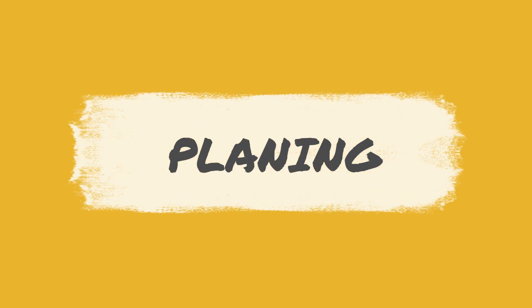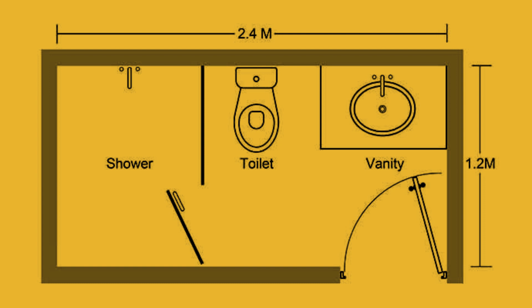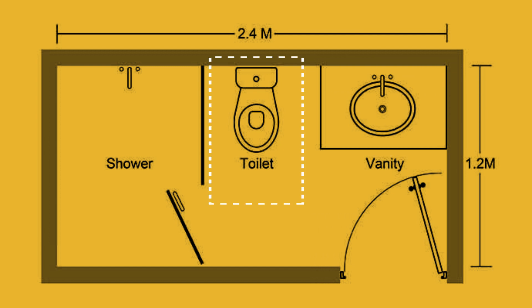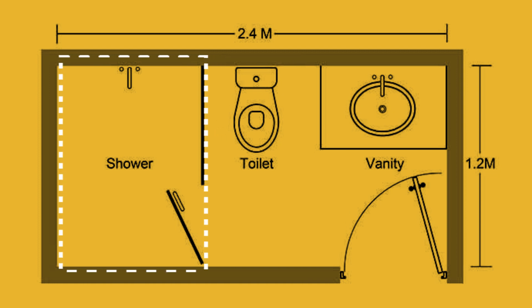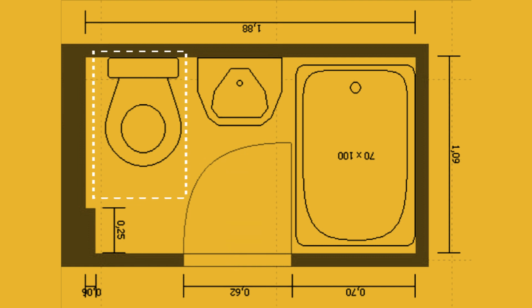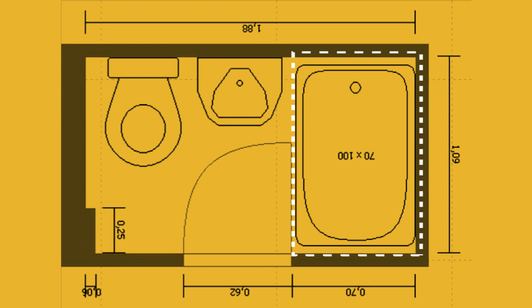Planning. Think of your bathroom as a journey. Upon entering, the wash basin should greet you first due to its frequent use. Next up, the closet, and finally, the bathing area. If your door is centered on a long wall, set the wash basin directly across, the closet by the door's opening side, and the bathing area opposite the door.